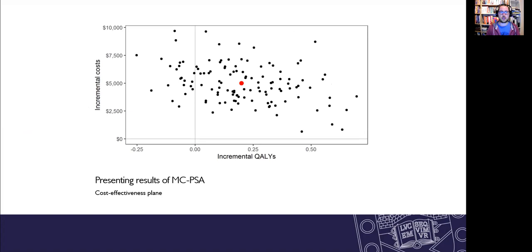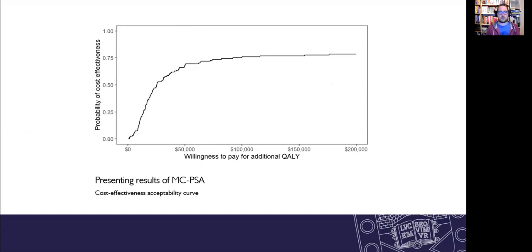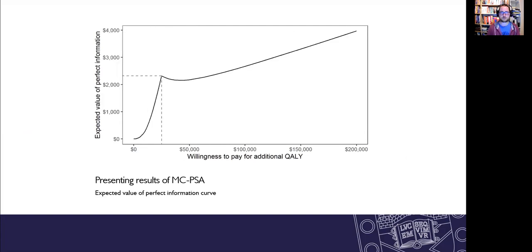So here's the typical kind of output you'd get from a Monte Carlo PSA. Each one of those points is one iteration, one set of parameters that's been sampled and the resulting incremental qualities and costs from that. Often it's more helpful to look at the probability of cost effectiveness for one treatment against the willingness to pay for a unit of benefit such as an additional quality. So that's the cost effectiveness acceptability curve. We might also want to know what the expected value of perfect information is, how much value could we get by reducing the uncertainty to nil to help our decision making.